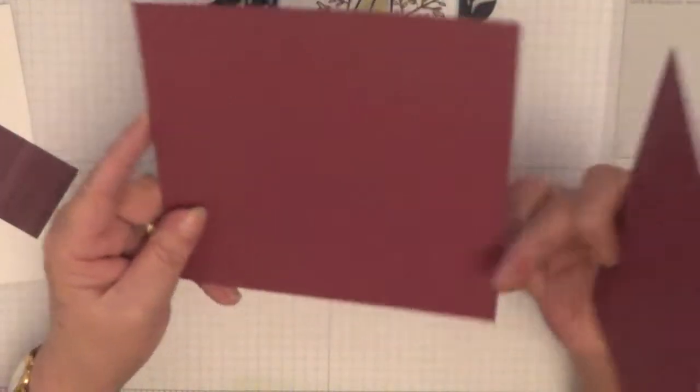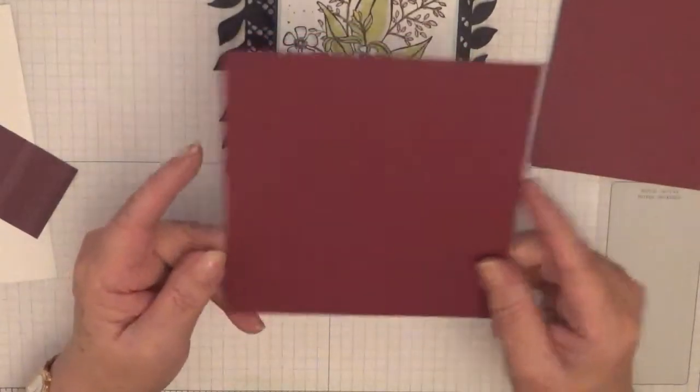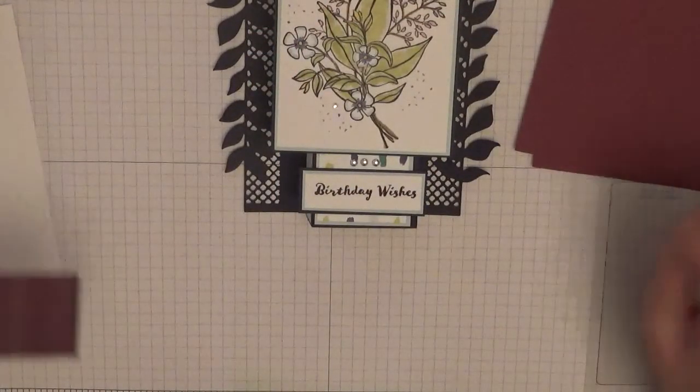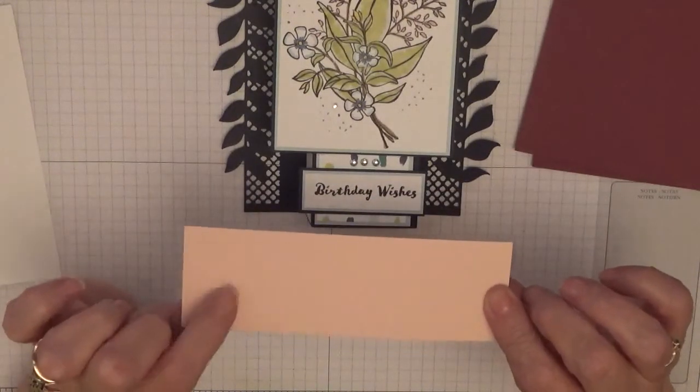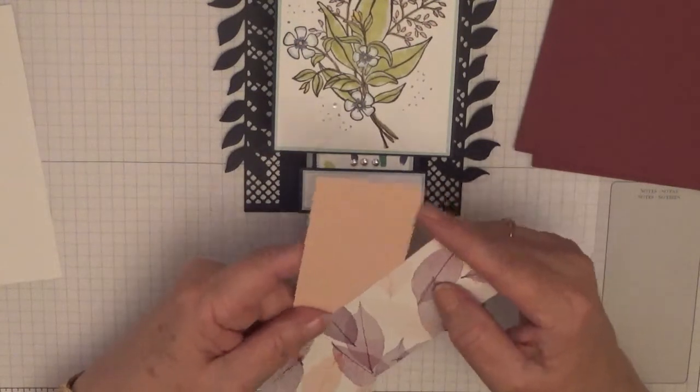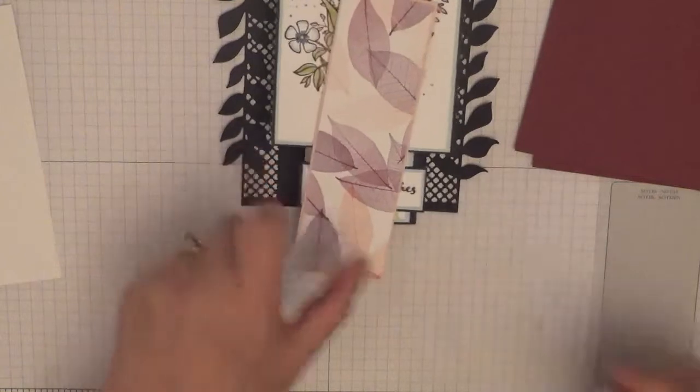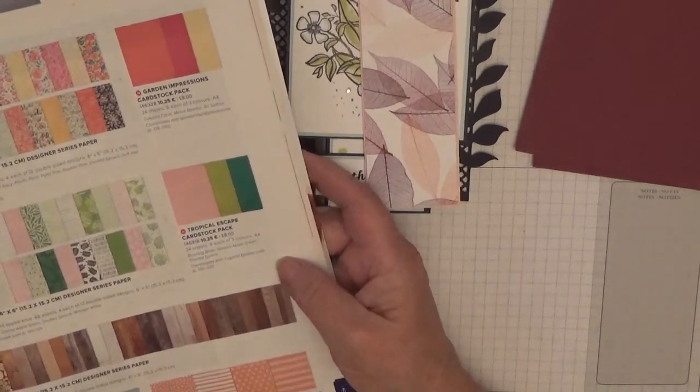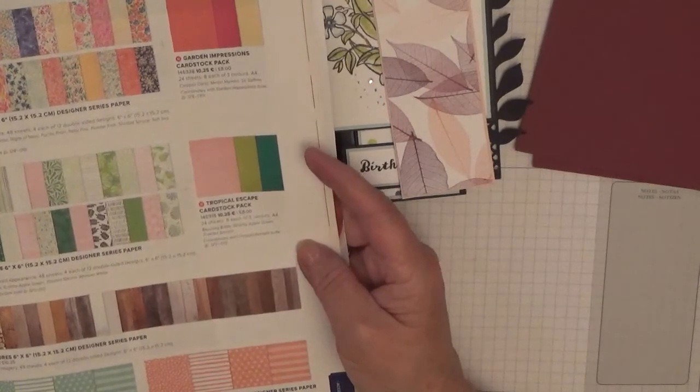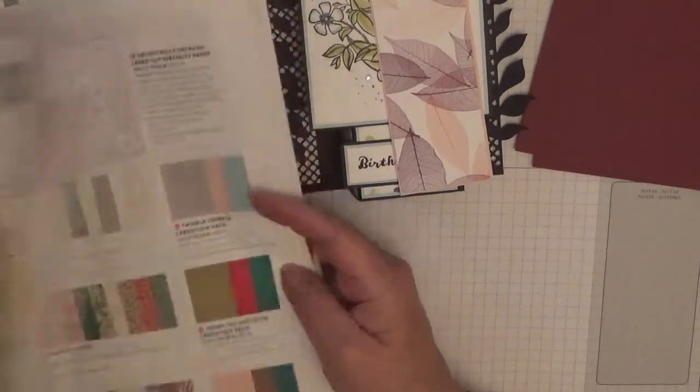For the card you'll need a piece in Rich Raspberry, six inches by five and seven eighths, and five inches by five and seven eighths. For the flowers I'm using Blushing Bride, so you'll need a piece that is one and seven eighths by five and five eighths, and designer series paper - this one is Nature's Poem designer series paper.